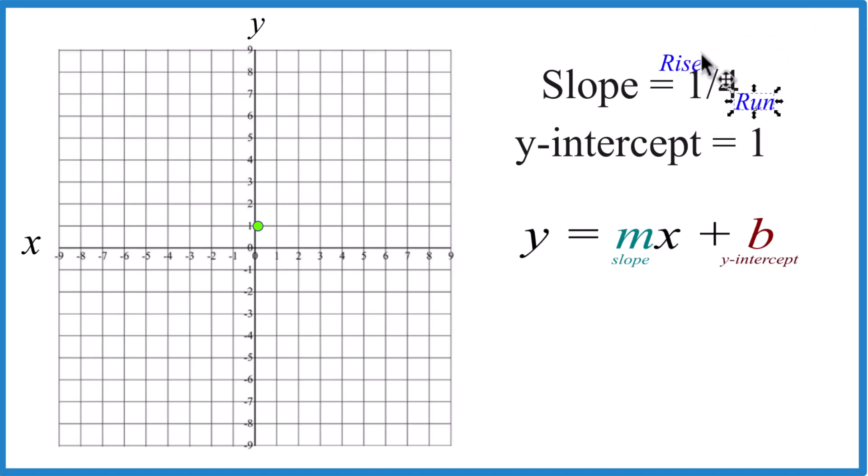So we rise one and run four, and we start at our y-intercept here. So rise one and run one, two, three, four. From there, we do it again. Rise one, run one, two, three, four.